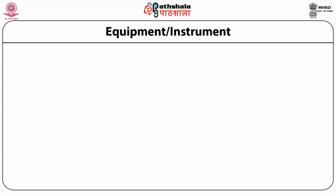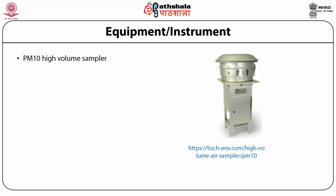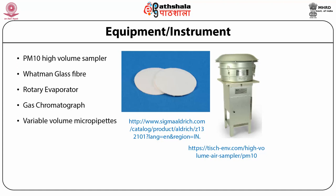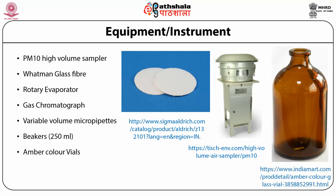The instruments required for the analysis of volatile organic compounds include a PM10 high volume sampler, Whatman glass fiber filter, rotary evaporator, gas chromatograph with flame ionization detector fitted with a capillary column, variable volume micropipettes, beakers, amber color vials of 3 to 5 ml capacity, and a chromatographic column.